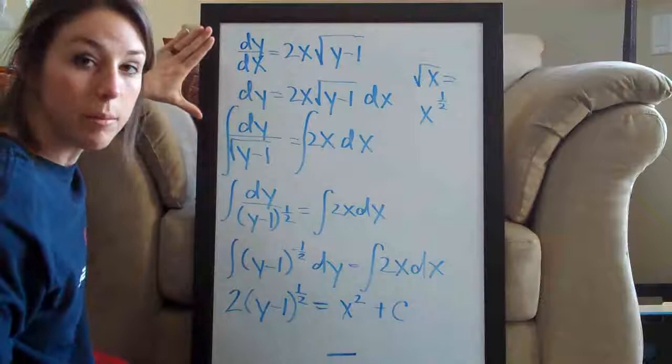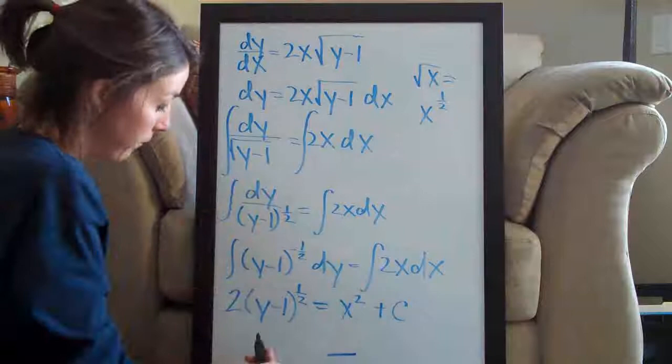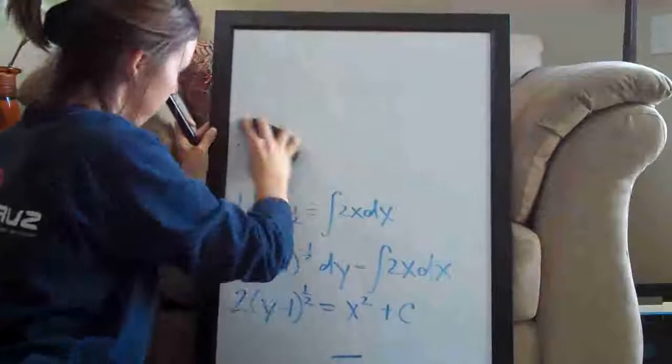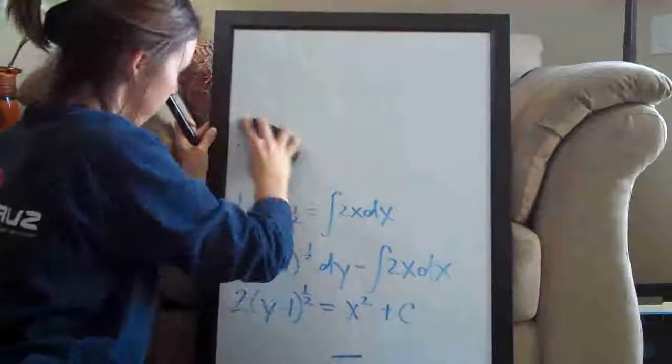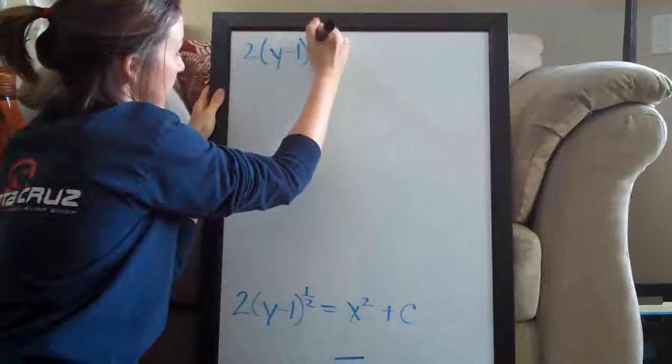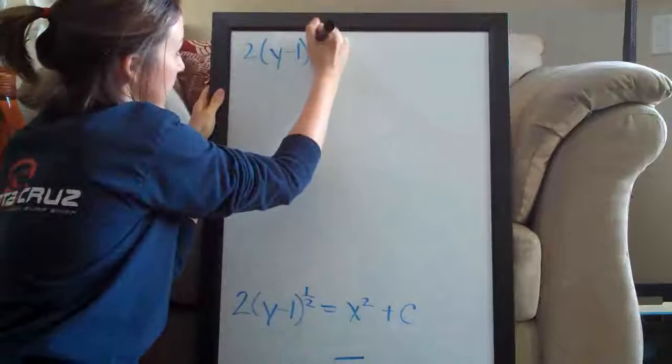Remember the steps: separate the variables with y's on one side and x's on the other, integrate both sides, and finally solve for y. So we have the equation 2 times y minus 1 to the one half equals x squared plus c.